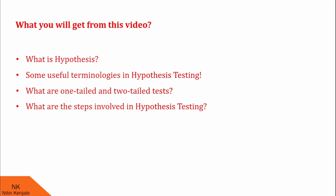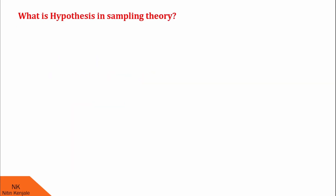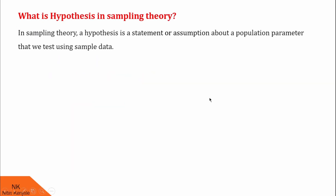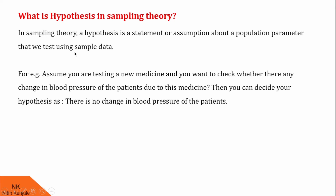What is hypothesis in sampling theory? In sampling theory, hypothesis is a statement or assumption about the population parameter that we test using sample data. For example, assume you are testing a new medicine and you want to check whether there is any change in blood pressure of patients due to this medicine, then you can decide your hypothesis as: there is no change in blood pressure of the patients.